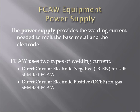Regarding FCAW power supply: the power supply provides the welding current that melts the base metal and electrode. FCAW uses two types of welding current: Direct Current Electrode Negative (DCEN) for self-shielded FCAW, and Direct Current Electrode Positive (DCEP) for gas-shielded FCAW.